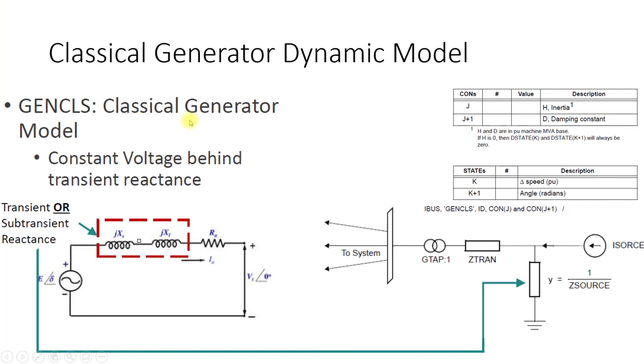This is a similar model which we discussed during our equal angle criterion or when we were building up our basic concepts of transient stability. What does this model mean? This is a model in which constant voltage behind transient reactance is used.